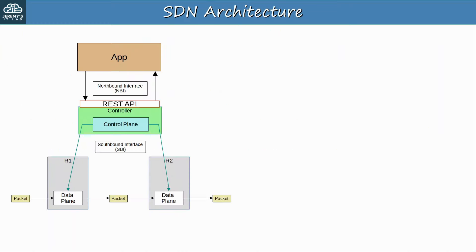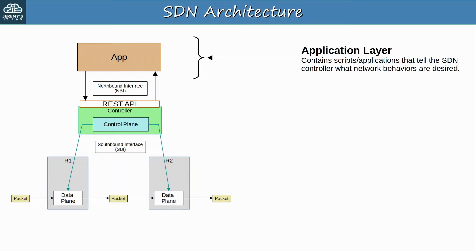Here's one more look at the SDN architecture we covered in the first video of this automation section. The applications are on top, the controller in the middle, and the network devices on the bottom. These three layers of the architecture have names. On top there is the application layer. This layer contains scripts and applications that tell the SDN controller what network behaviors are desired. Note that this isn't the application layer of the OSI model — this is a totally different concept.